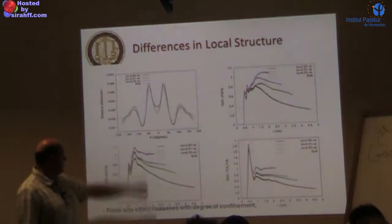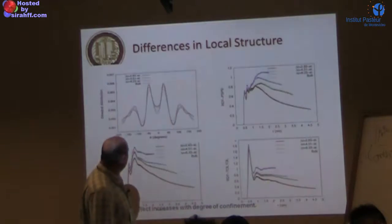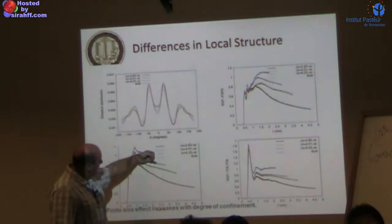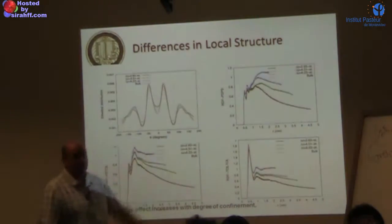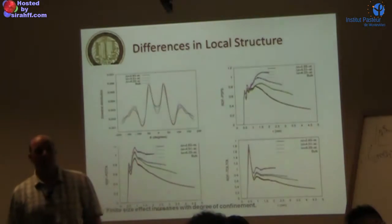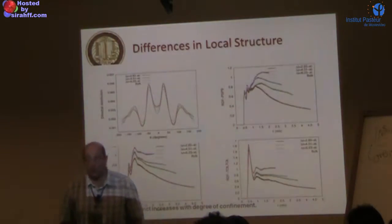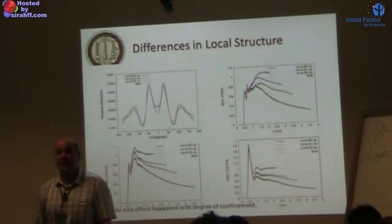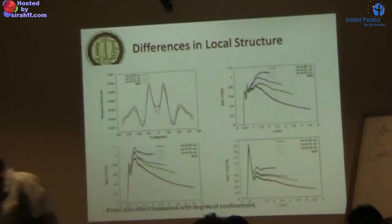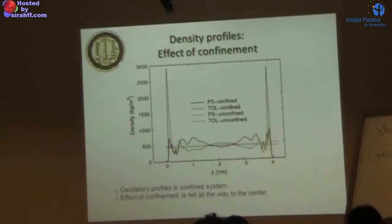The same is true for the radial distribution functions. Typically they follow the order: bulk ≈ 6 nm confinement > 4 nm > 2.8 nm. The more the system is confined, the less it behaves bulk-like, both in its RDF and in its dihedral distributions.